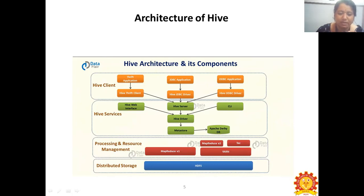The second component under the Hive architecture is Hive Services. Under Hive Services, we have three things: the Hive interface, Hive Server, and CLI. These three are connected to the Hive Server, which brings the output to the Metastore. The Metastore brings the output to the database, which is Apache Derby.